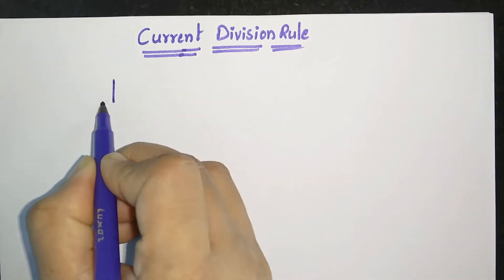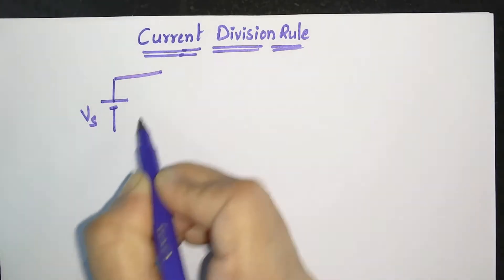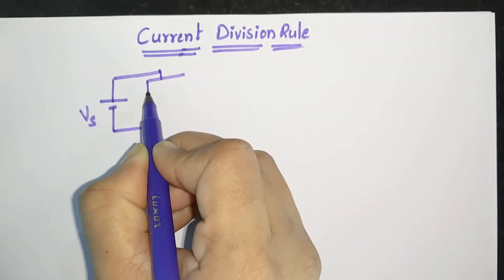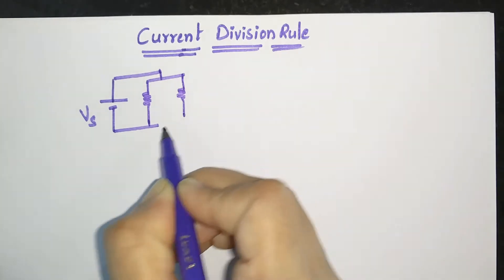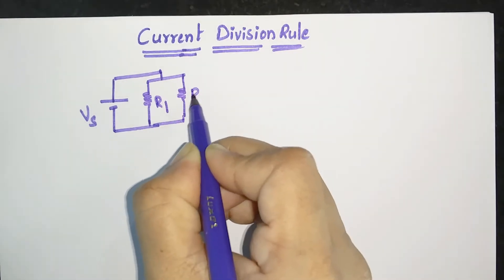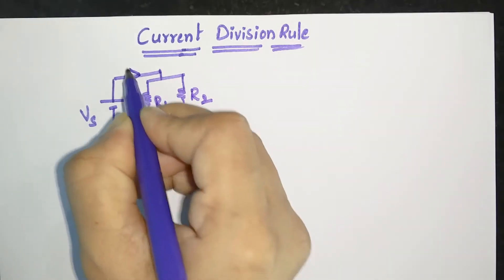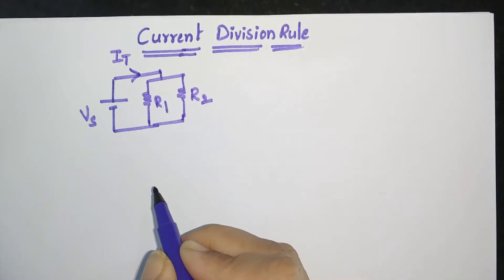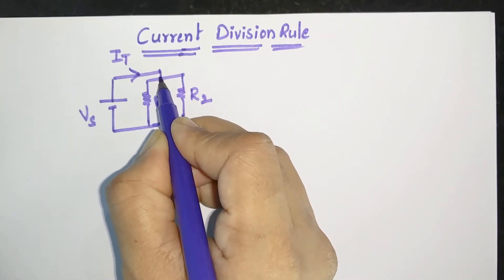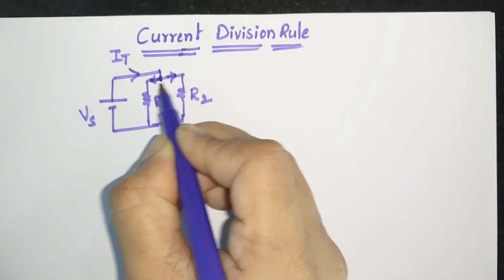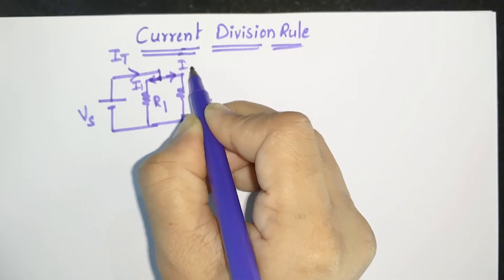This is the voltage source Vs connected to a parallel combination of two branches having resistors R1 and R2. The current coming out from the source, let it be IT (total current), and at this node it is dividing into two parts. Because it is the first branch, let it be I1; the second branch let it be I2.